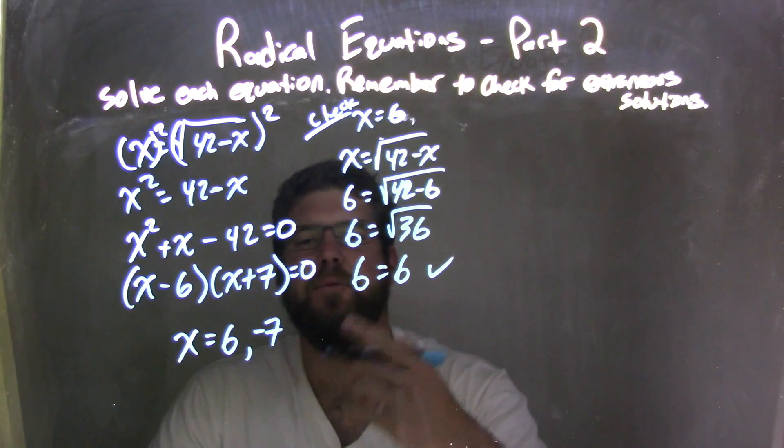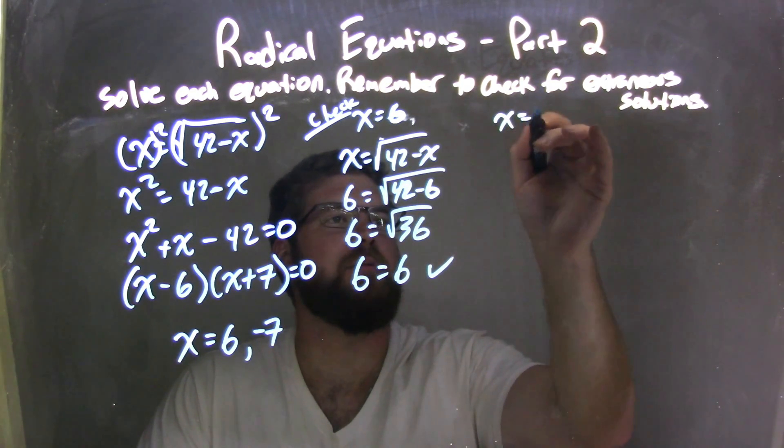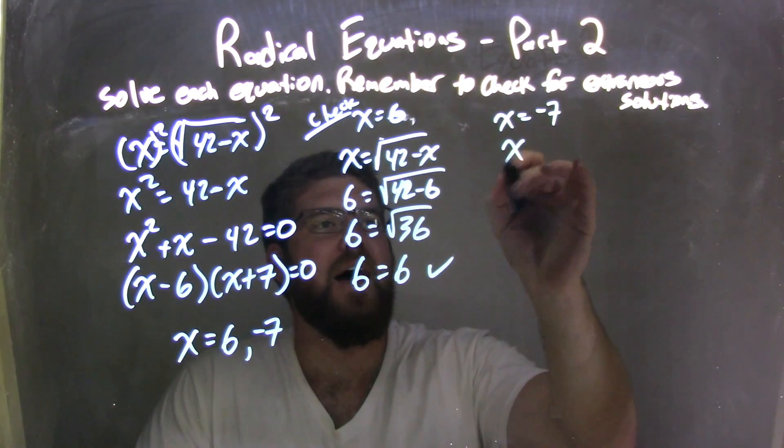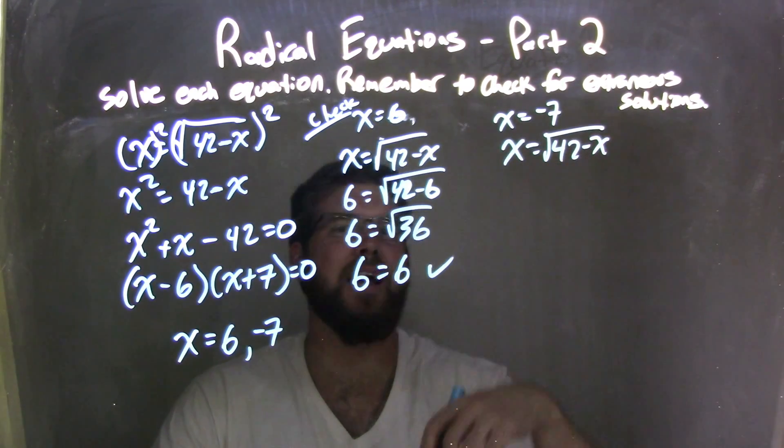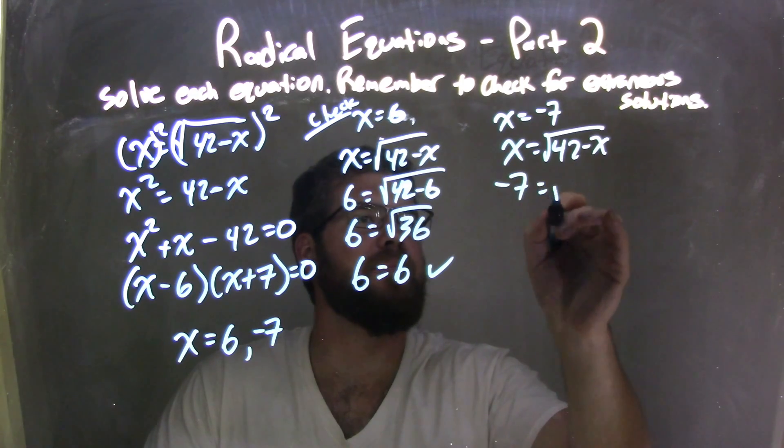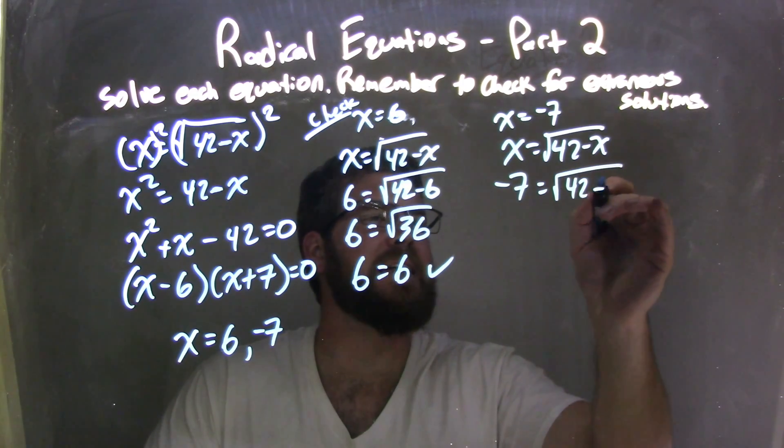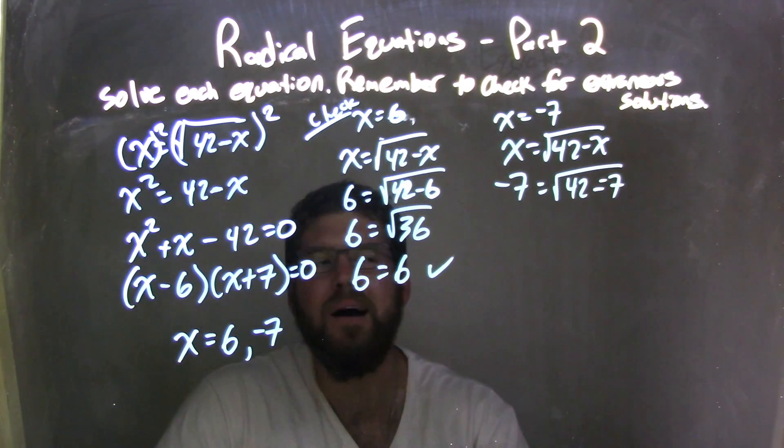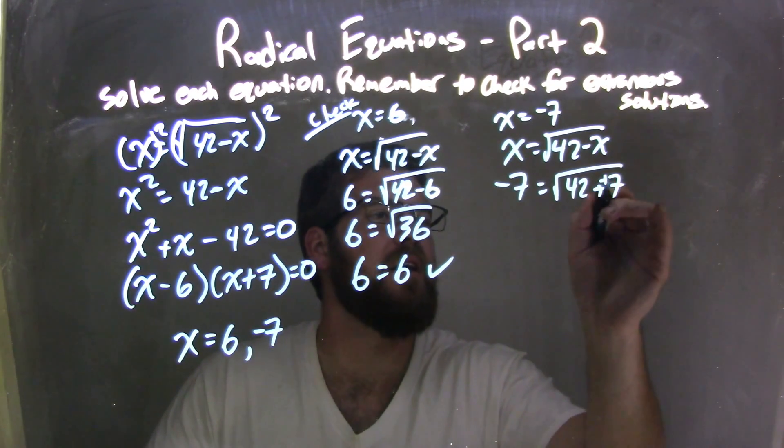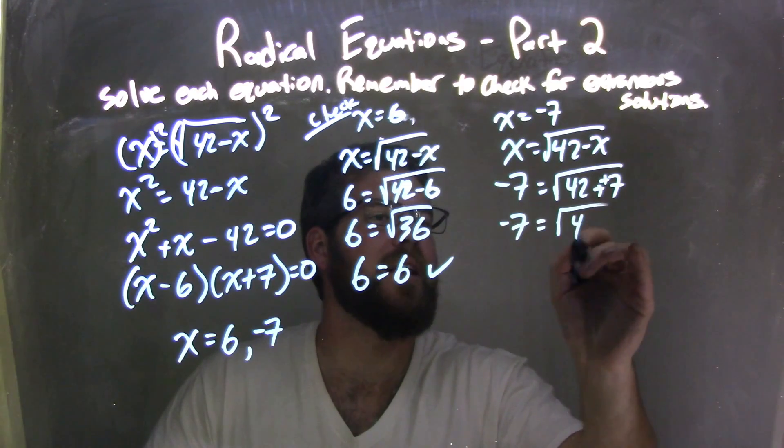Let's try x equals negative 7. We have x equals the square root of 42 minus x. Plugging negative 7 in: 42 minus negative 7 is like adding positive 7. So that ends up being negative 7 equals the square root of 49.